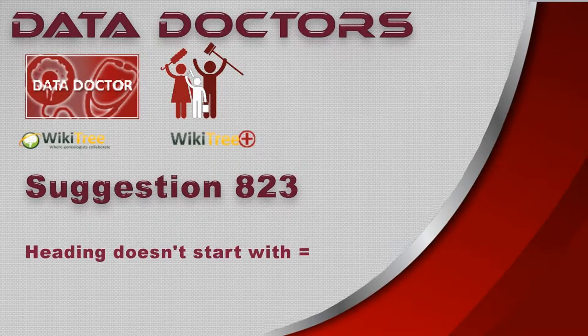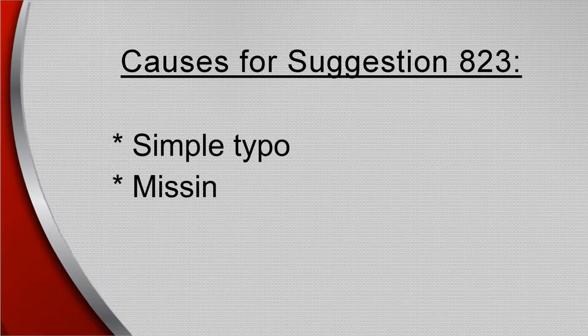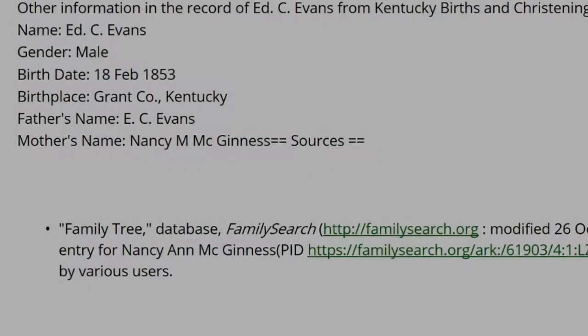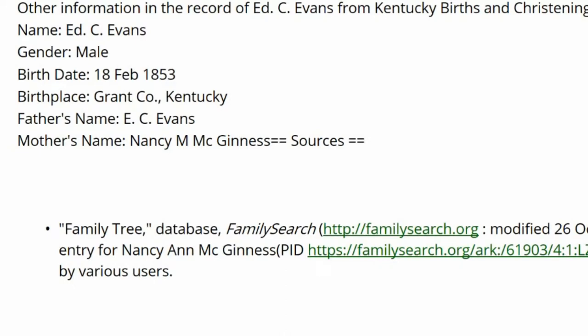Welcome to Data Doctor's video, Suggestion 823: Heading Doesn't Start with Equal Sign. Causes for Suggestion 823 are usually typos or missing returns. When a heading doesn't start with the proper equal signs, the profile's public view will show the code. The intended heading is read as regular text and is included with the same.